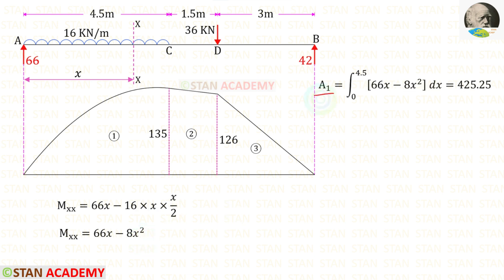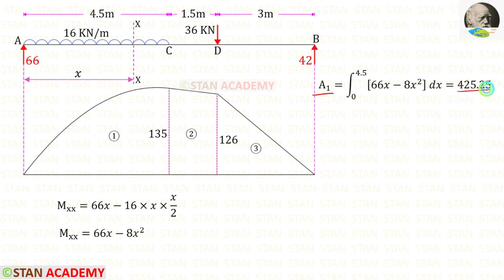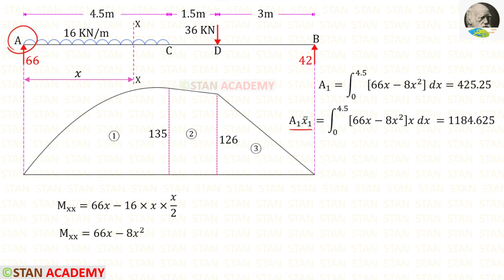Now we find area 1 by integrating Mxx with respect to x, with limits 0 to 4.5. Using a calculator, area 1 = 425.25. For area 1·x̄₁ about point A, we integrate x·Mxx over the same limits. Area 1·x̄₁ = 1184.625.